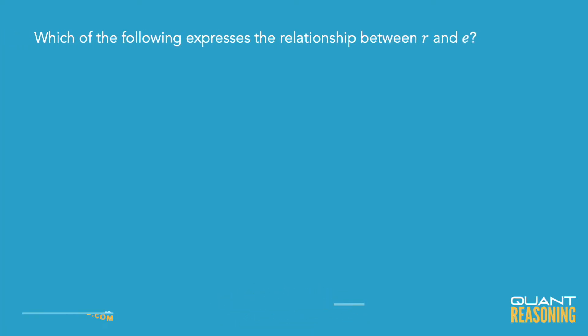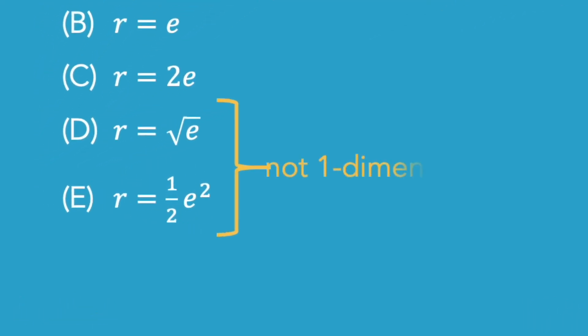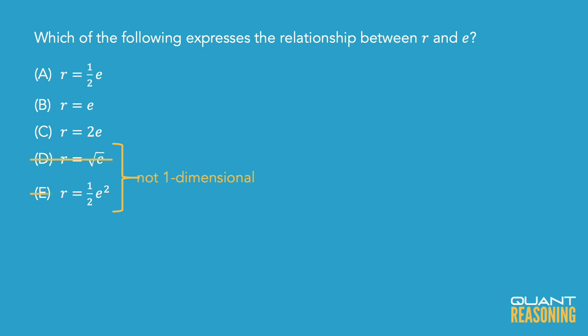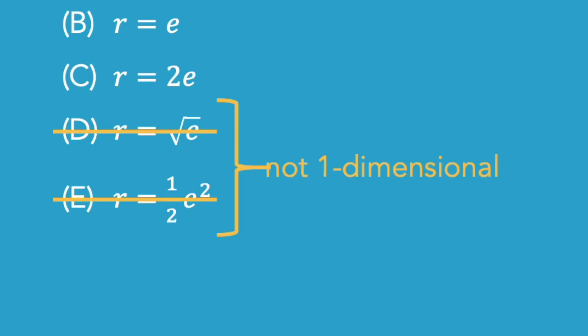If you look at the answer choices, answer choices D and E really don't make sense at all because the units of r and the units of e should be the same units, whether they're centimeters or feet or inches. They have to be some kind of one-dimensional length measurement. After all, the radius is a length and the edge of the cube is also a length. So any equation that has r on one side with the square root of e or e squared doesn't make any sense because then the units on either side of the equal sign don't match. So that's a way to eliminate D and E right off the bat.